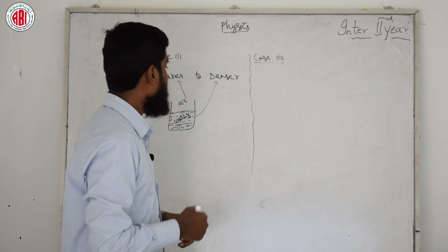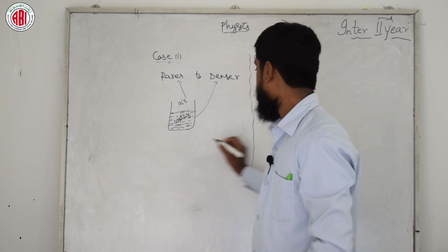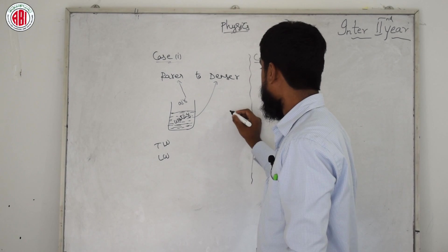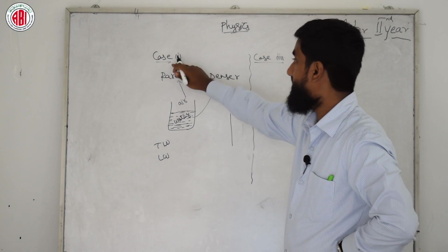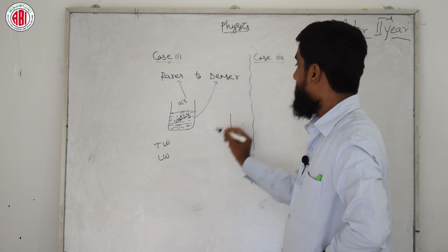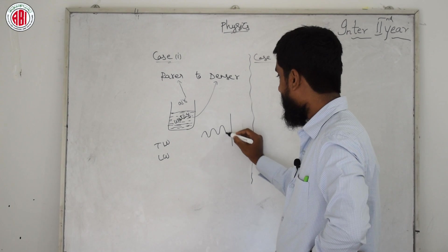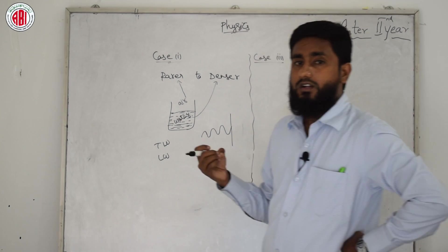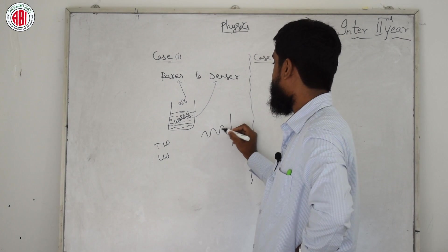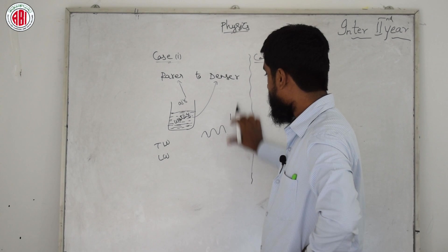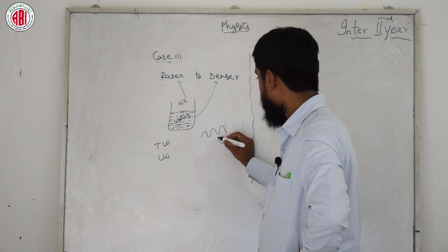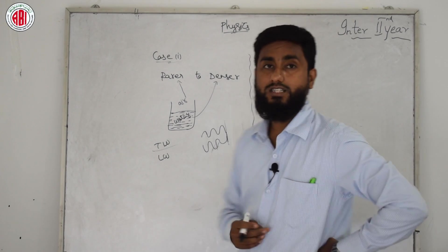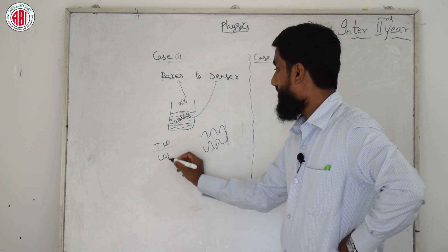We have two types of waves: transverse waves and longitudinal waves. For Case 1 — rarer to denser medium — with transverse waves: after the wave touches the denser surface, its crest becomes a trough. We know waves have crests and troughs; upon reflection, the crest becomes a trough.